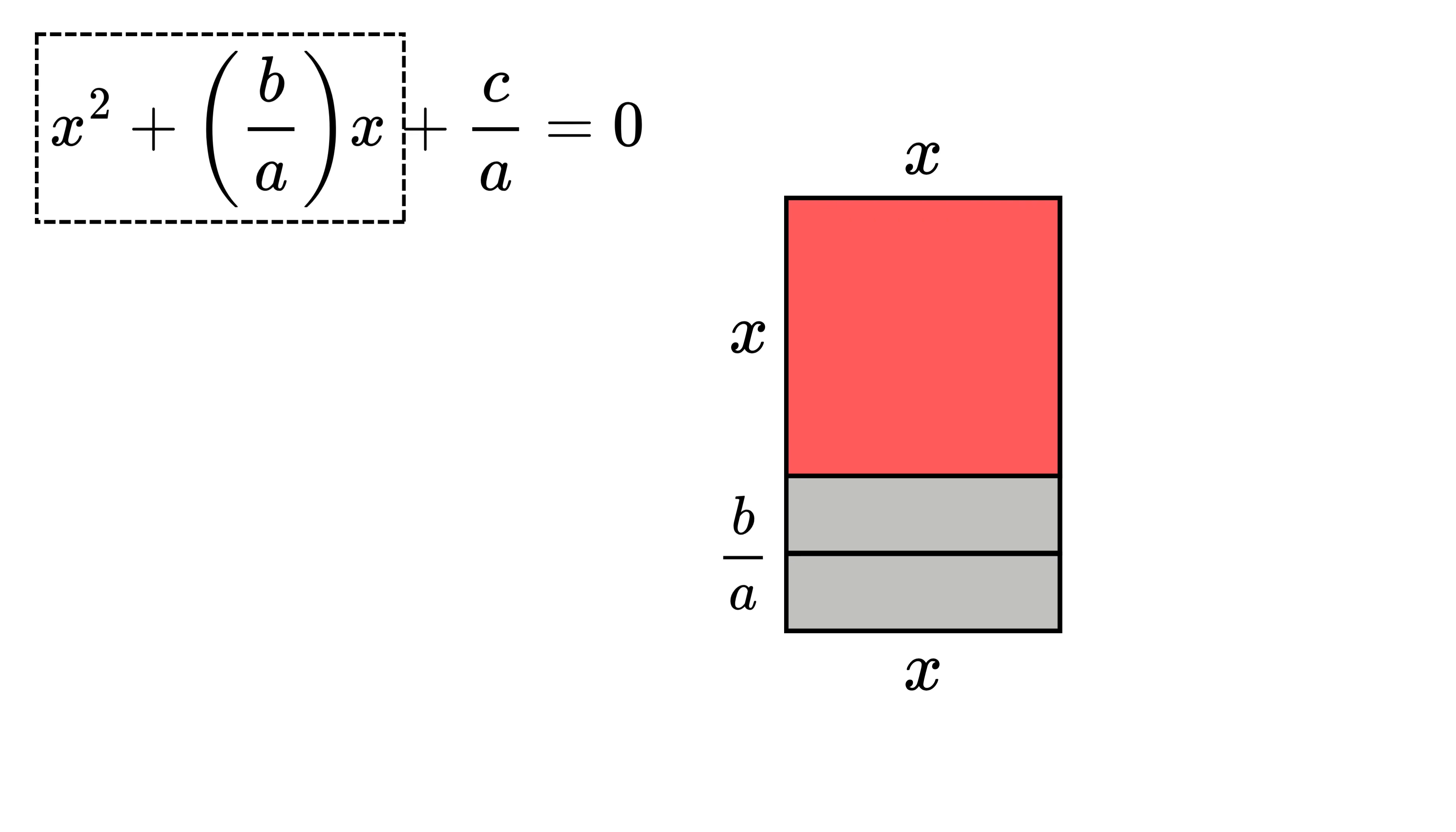We now cut this rectangle into two equal parts like this, so that each smaller rectangle has sides x and b/2a. We then take one of these and rotate it around like this to place it beside the original square, forming almost a larger square. The side of this nearly big square is now x + b/2a, isn't it?